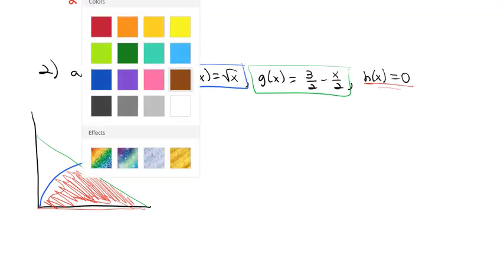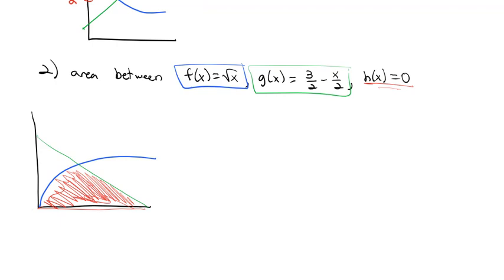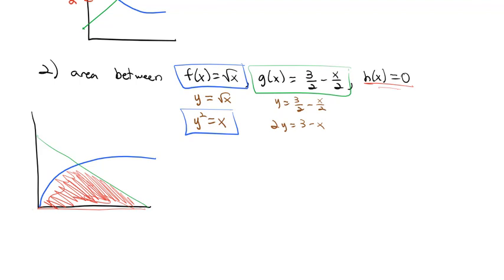First, we change all functions to y functions. y equals the square root of x — squaring both sides gives y squared equals x. That's the new blue function. For g of x: y equals 3 halves minus x over 2. Multiplying both sides by 2 gives 2y equals 3 minus x. Adding x and subtracting 2y, we get x equals 3 minus 2y — the new green function.